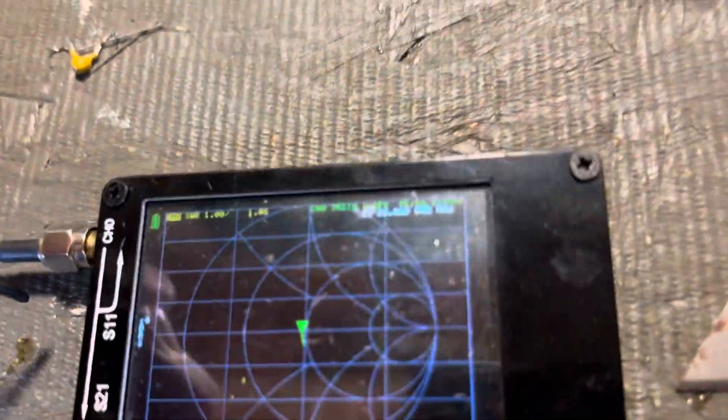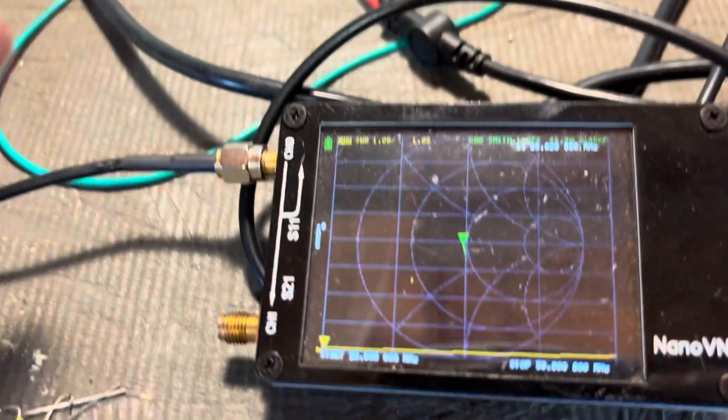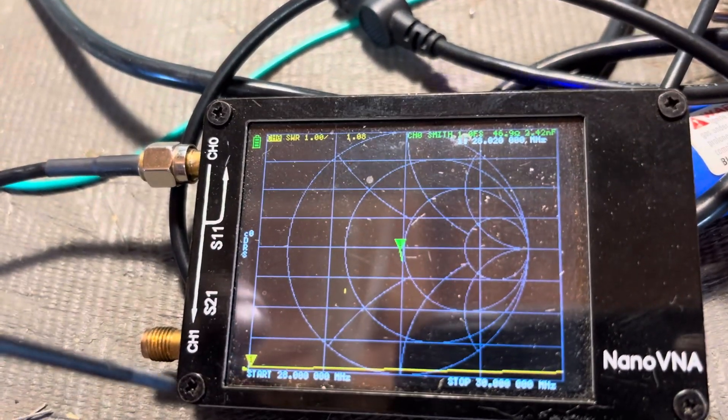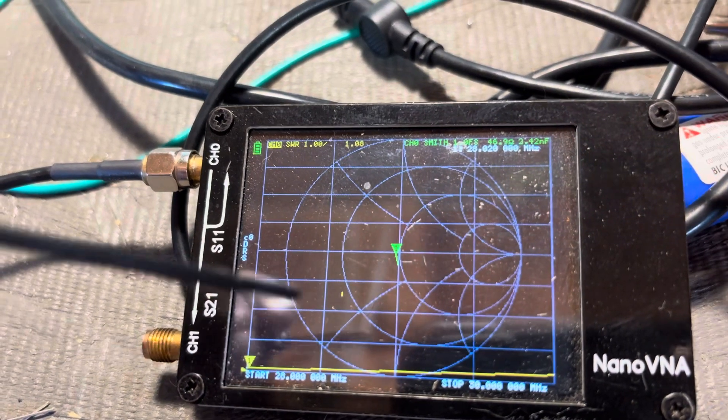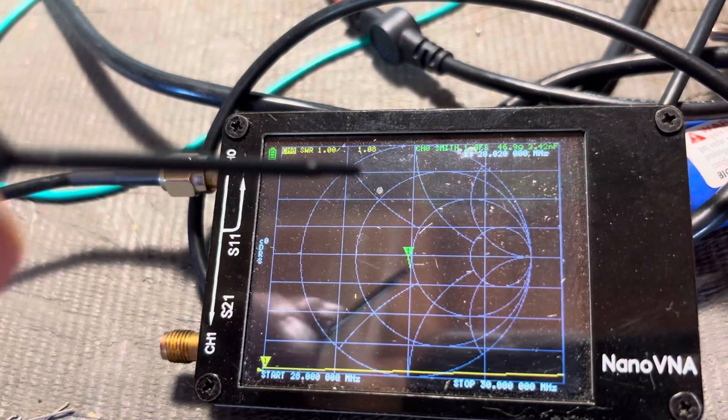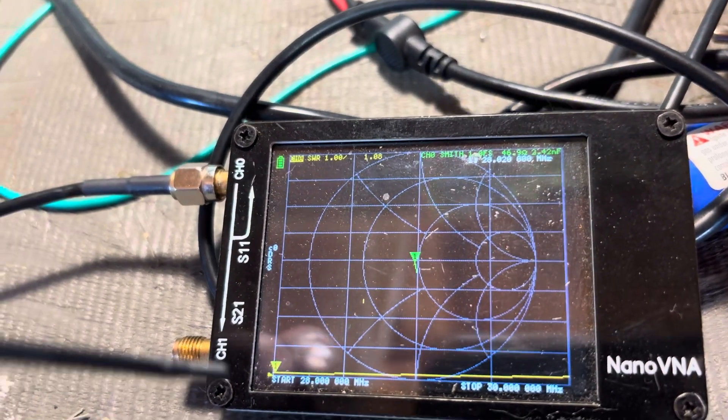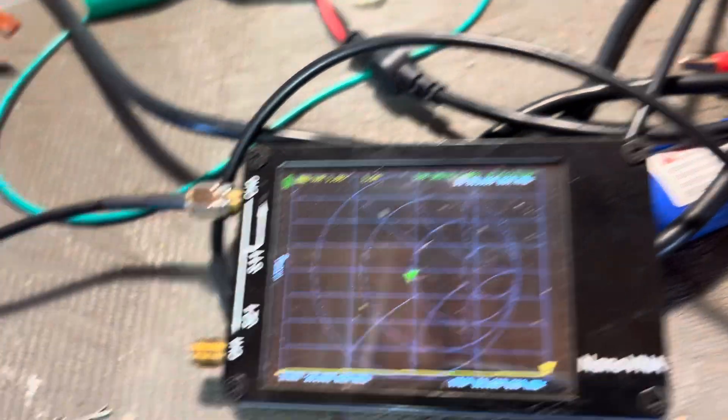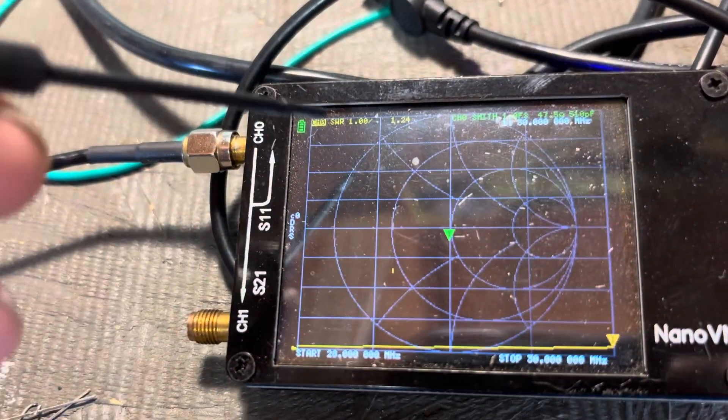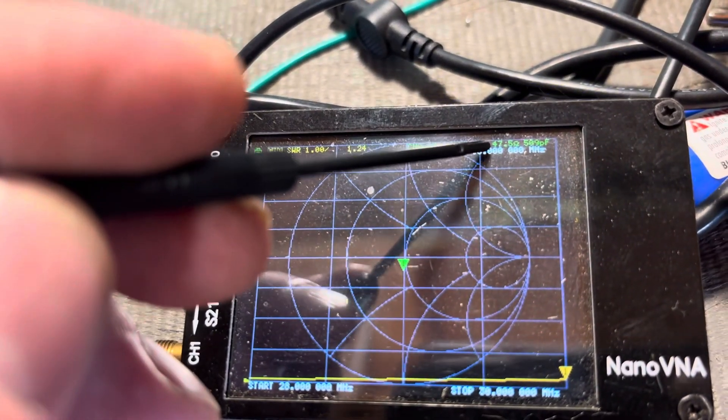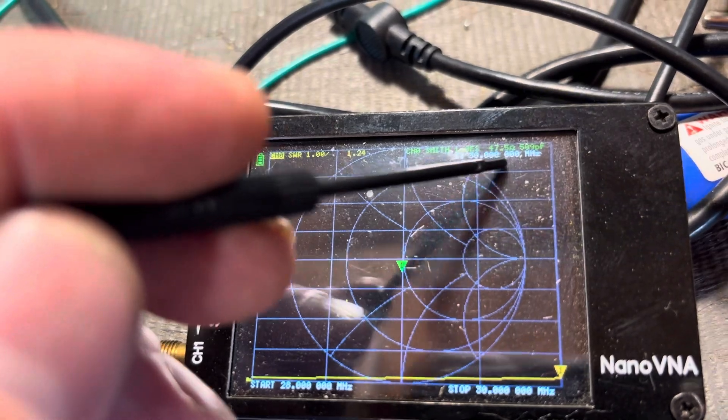So if you see here, the approximate impedance at 28 megahertz is 45 ohms, and the SWR is 1.08. So then if we take it and we go all the way to 30, it goes to an SWR of 1.24, and an impedance of 47.5 ohms.